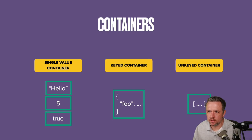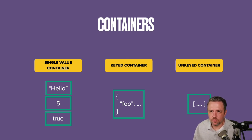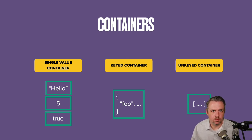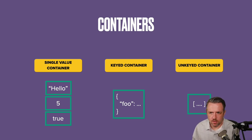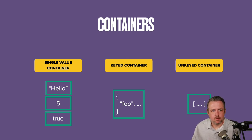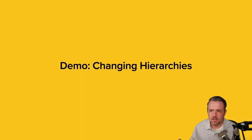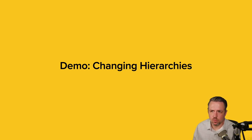Let's talk about containers. There are three types. Single value containers represent primitive values like the string 'hello', the number 5, or the Boolean true. Keyed containers are objects — they have string keys and the values can be anything. Unkeyed containers are arrays — anytime you hear 'unkeyed container', think array.